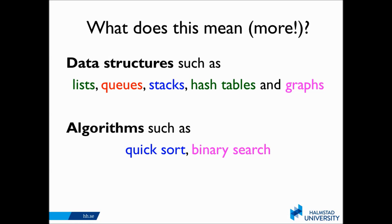For data structures, you should be familiar with lists, queues, stacks, hash tables, and graphs — not only knowing what they are, but more or less how to use them in a language of your preference. For algorithms, you should know about sorting and binary search. You won't need to program quicksort or binary search from scratch, but you should know about them, know that they are in the libraries of Java or Python, and know how to use them and when.